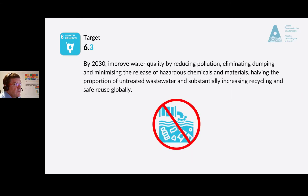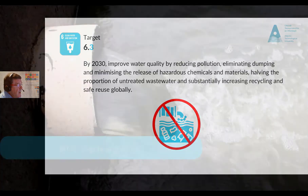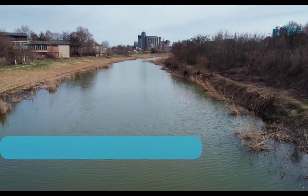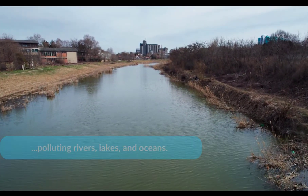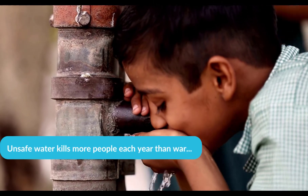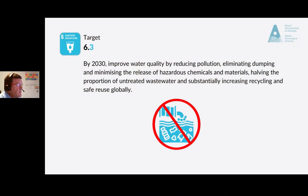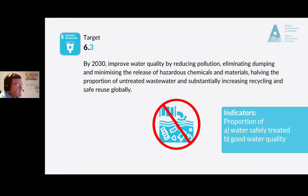Target 6.3: by 2030, improve water quality by reducing pollution, eliminating dumping, minimizing the release of hazardous chemicals and materials, halving the proportion of untreated wastewater, and substantially increasing recycling and safe reuse globally. Some 80% of the world's wastewater is dumped, largely untreated, back into the environment, polluting rivers, lakes, and oceans. Unsafe water kills more people each year than war and other forms of violence combined. The indicators are the proportion of domestic and industrial wastewater flows safely treated, and the proportion of bodies of water with good ambient water quality.